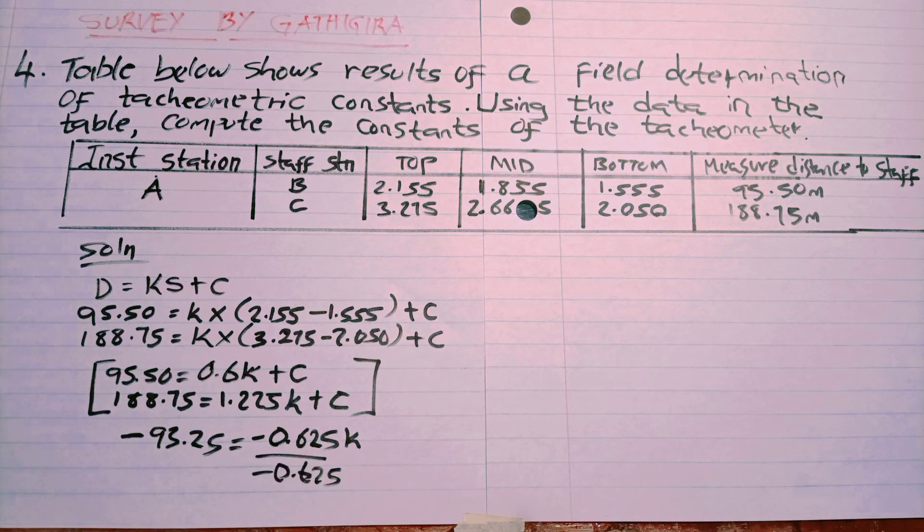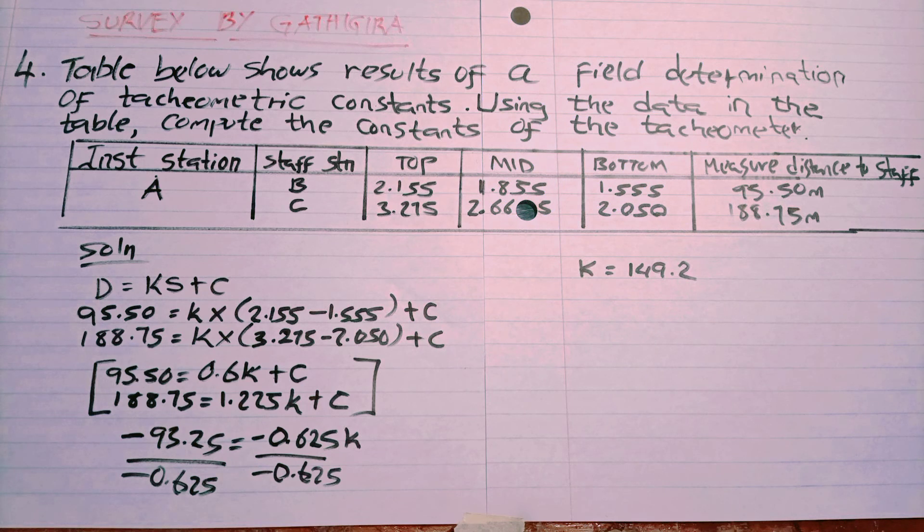By isolating K only, we divide by negative 0.625, then we get our answer.